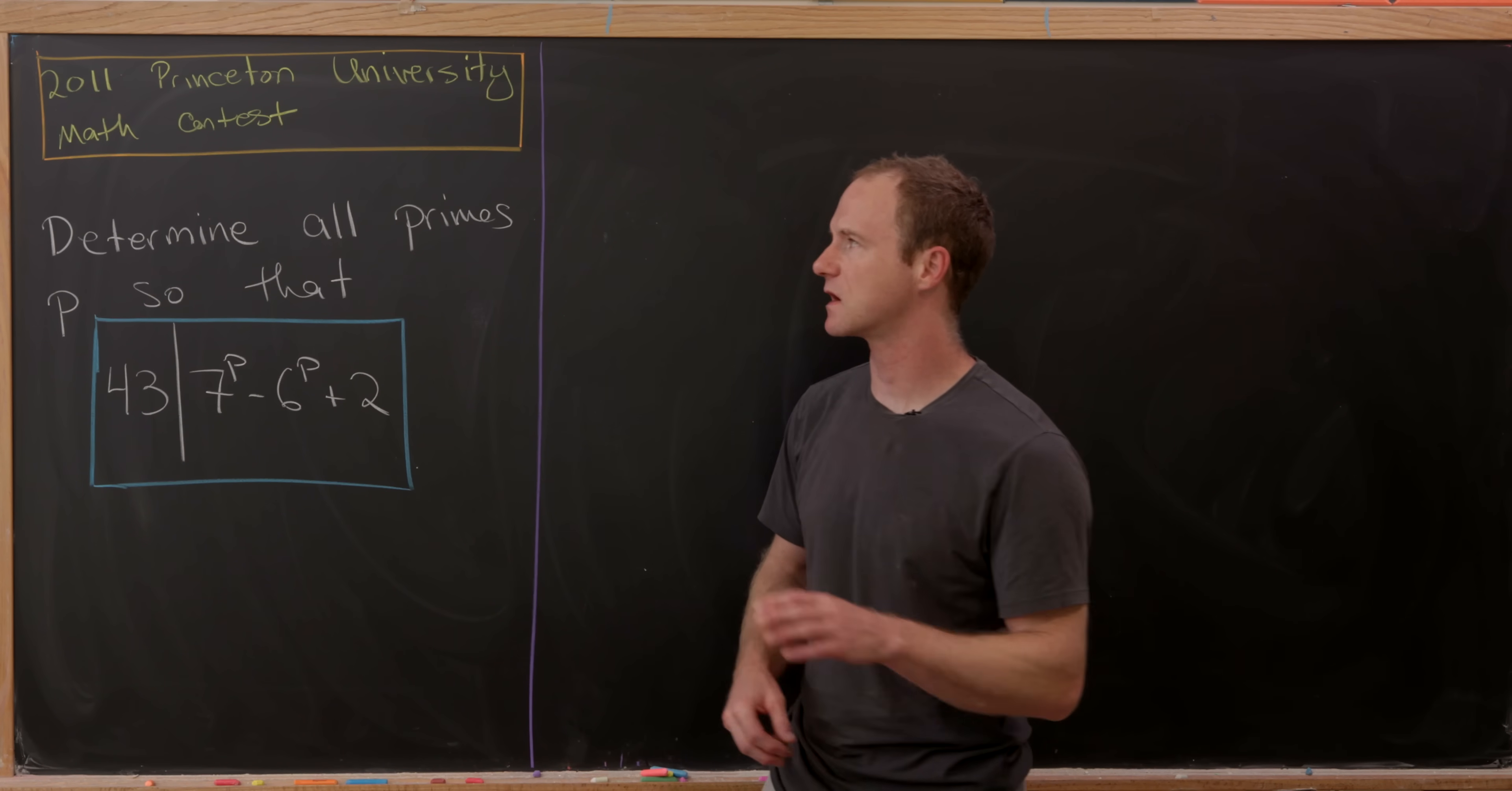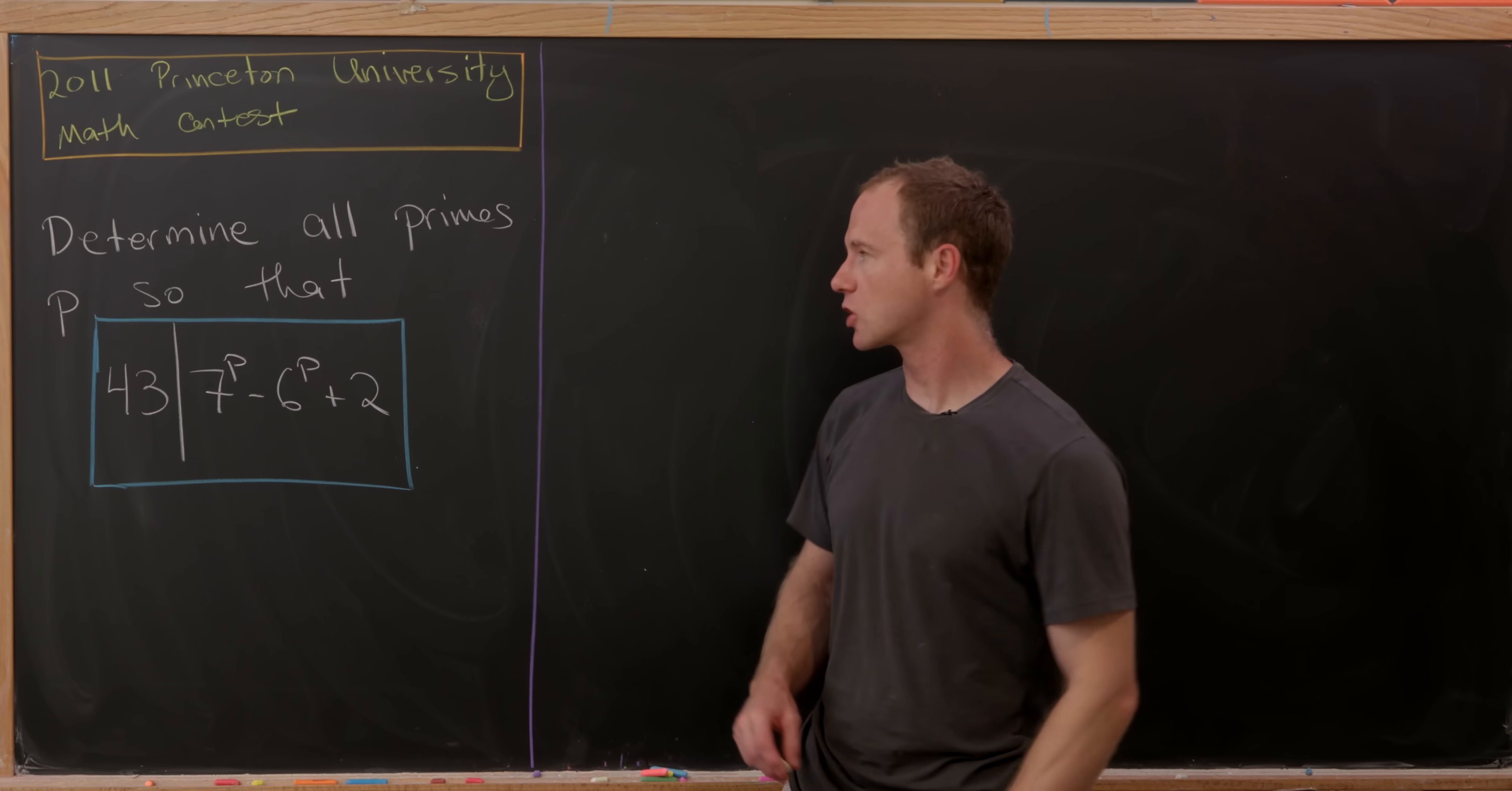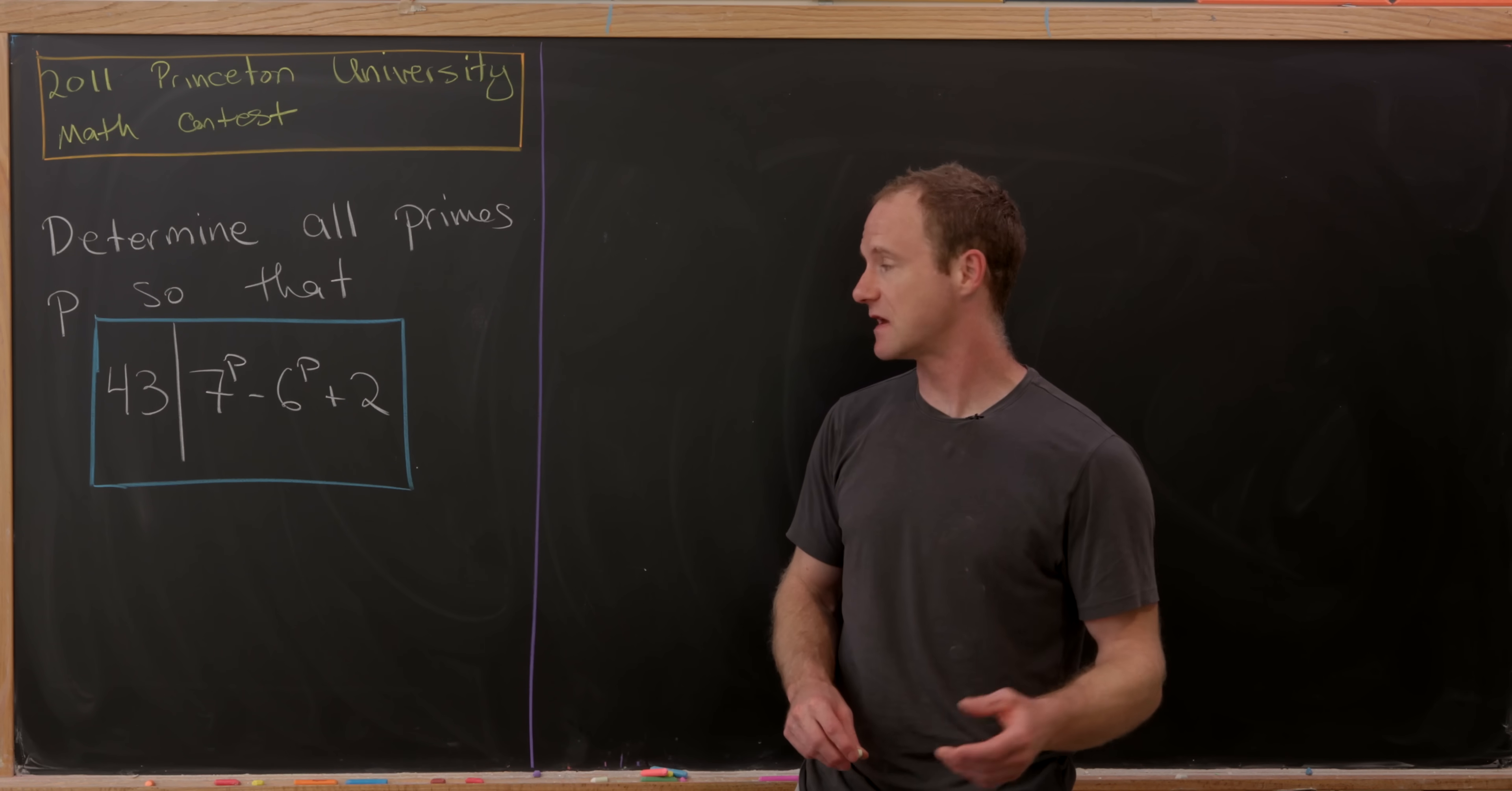Let's look at a nice number theory problem that comes from a Princeton University math contest in 2011. Our goal is to determine all primes p so that 43 divides 7^p - 6^p + 2.